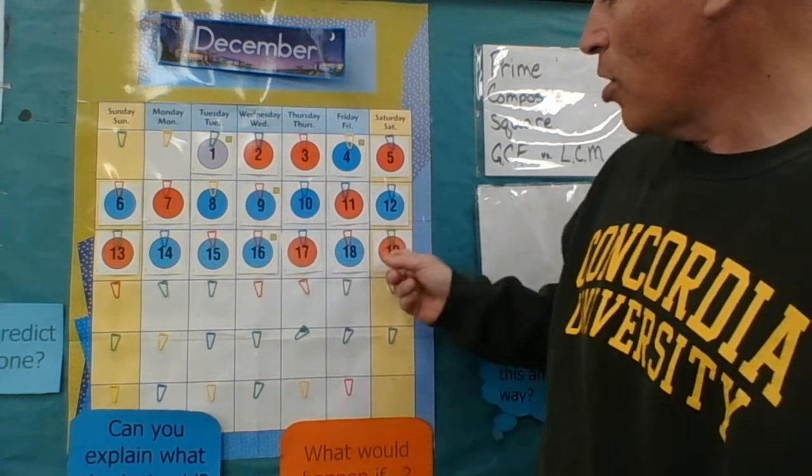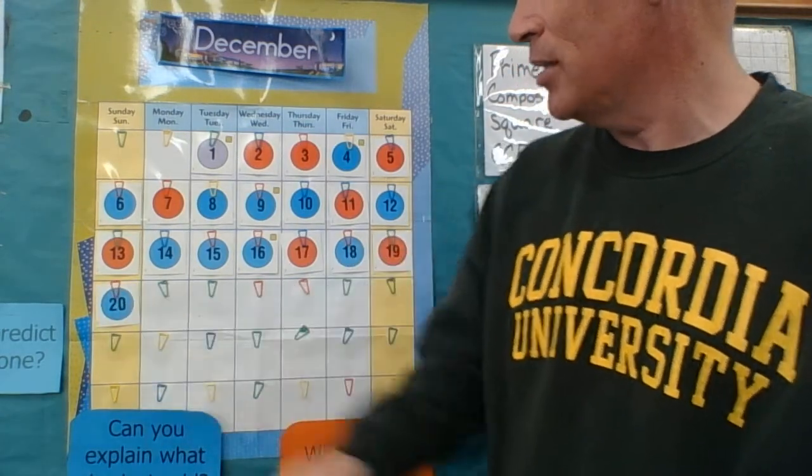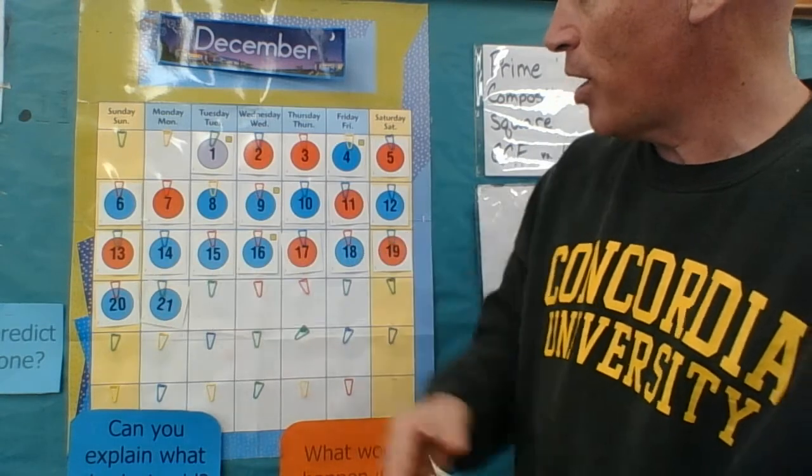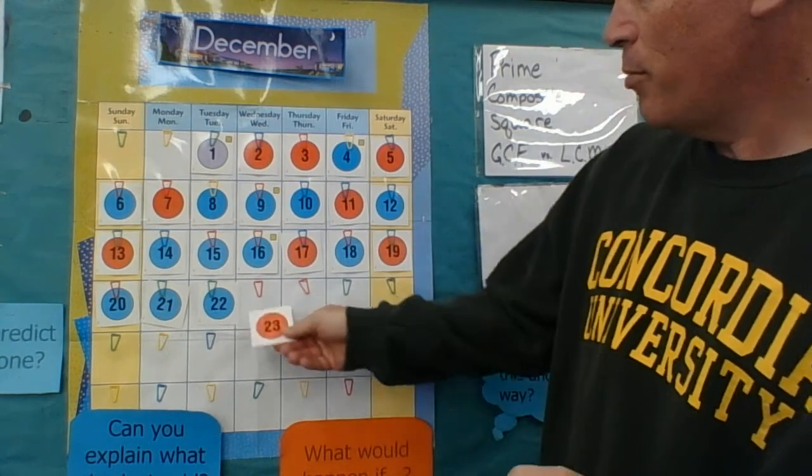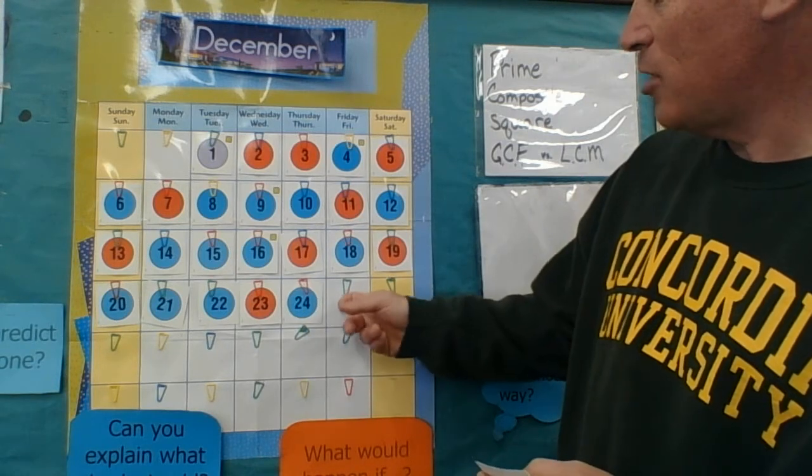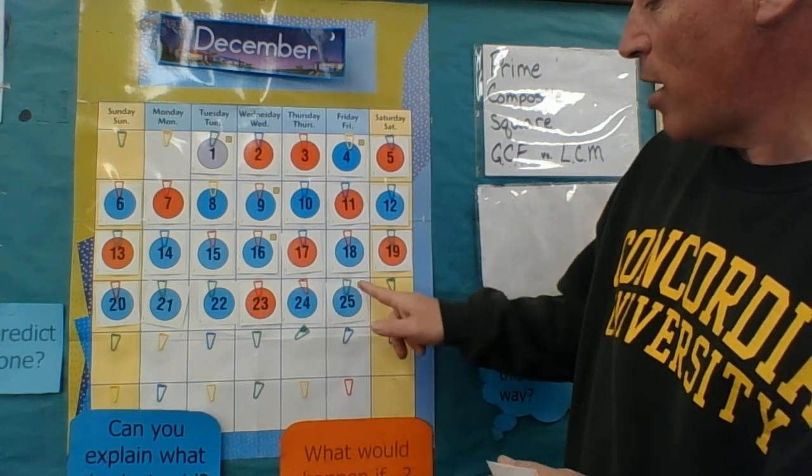During our holiday break, I'm just going to put them up here so you can see. It was 23, and what did we say 25 was? We said that was going to be a square because five times five.